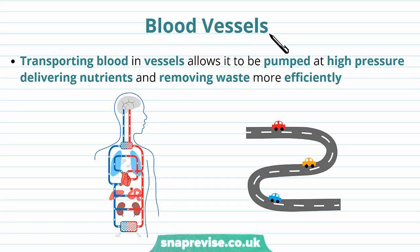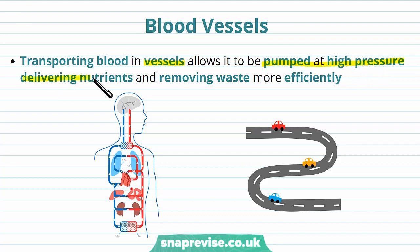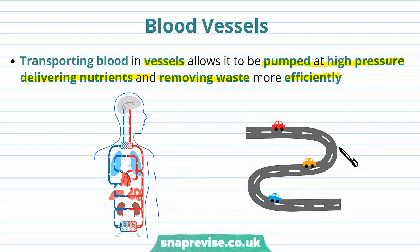Blood vessels are basically the tubes that run through the transport system in which blood is transported. The vessels in a closed loop allow blood to be pumped at high enough pressure so that flow is sufficient to deliver all the nutrients cells require, and to remove waste products as efficiently as possible. You can think of blood systems as a road system where motorways represent the larger vessels, and as they branch off they become smaller and smaller, then eventually rejoin a large motorway again.